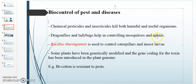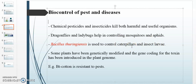Dragonflies and ladybugs help in controlling mosquitoes and other insect pests that affect plants. Biological agents are used to improve plant yield. The first important biological organism is Bacillus thuringiensis, which is a bacteria used to control caterpillars and insect larvae that damage plants and affect their growth and yield.